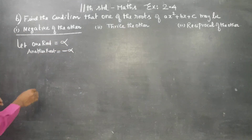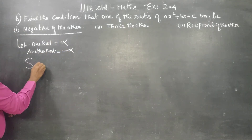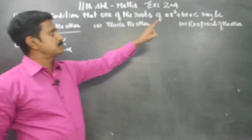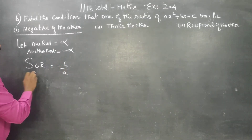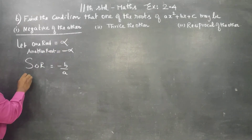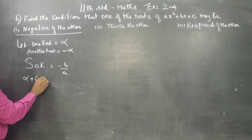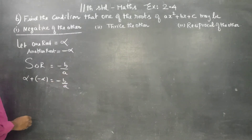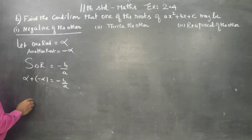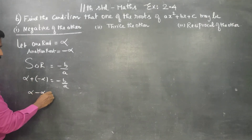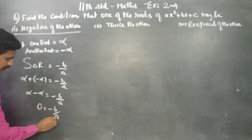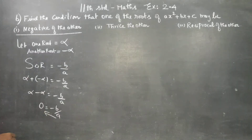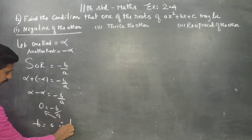First, I am going to find the sum of the roots. The sum of the roots formula is alpha plus minus alpha equal to minus b by a. Alpha plus minus alpha gives alpha minus alpha, which is 0, equal to minus b by a.